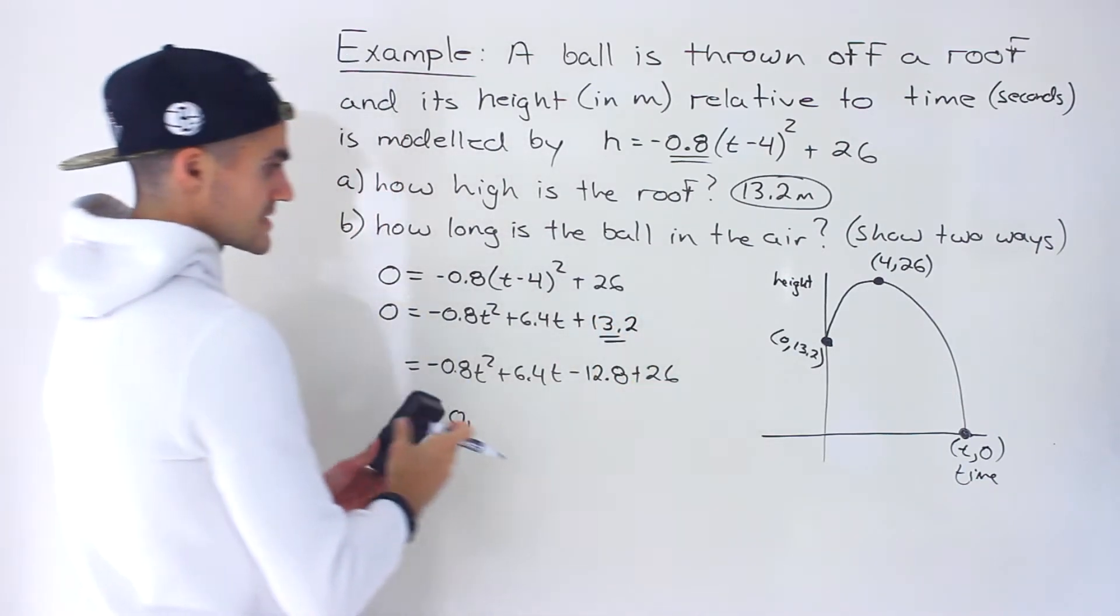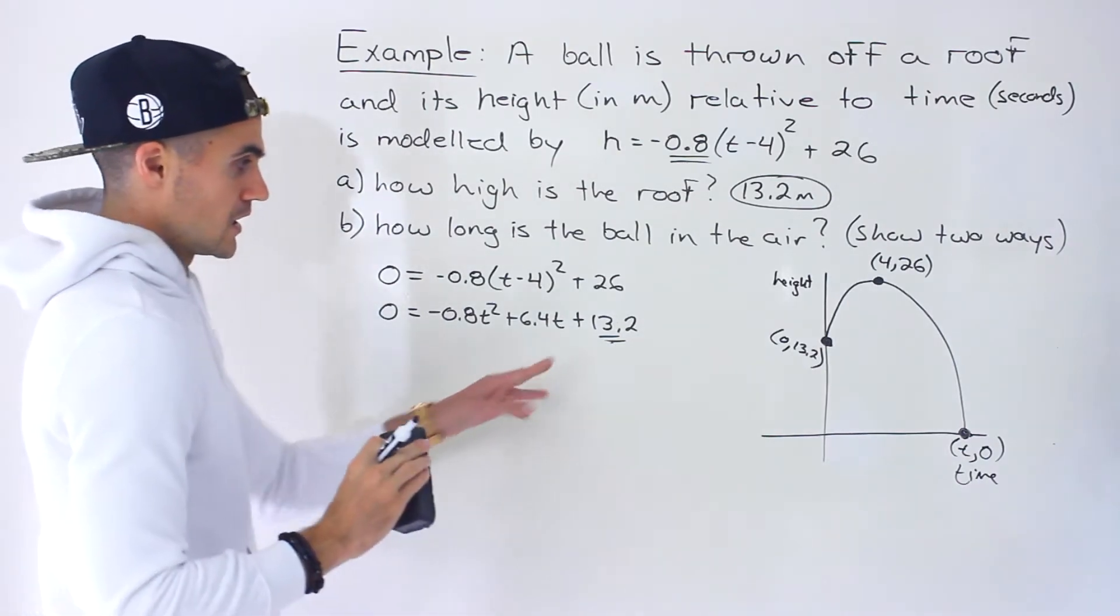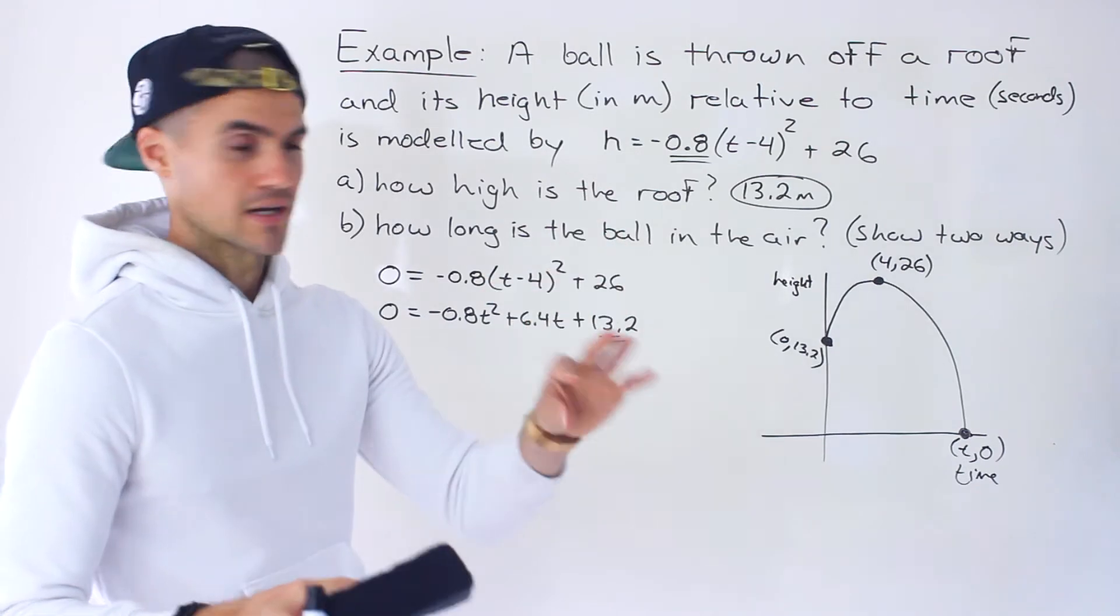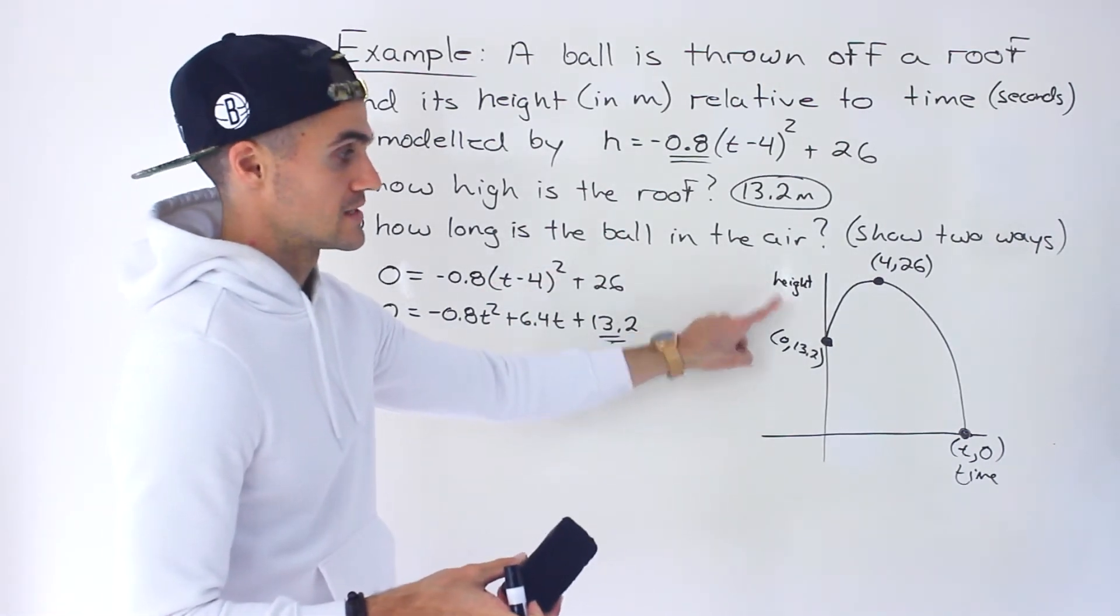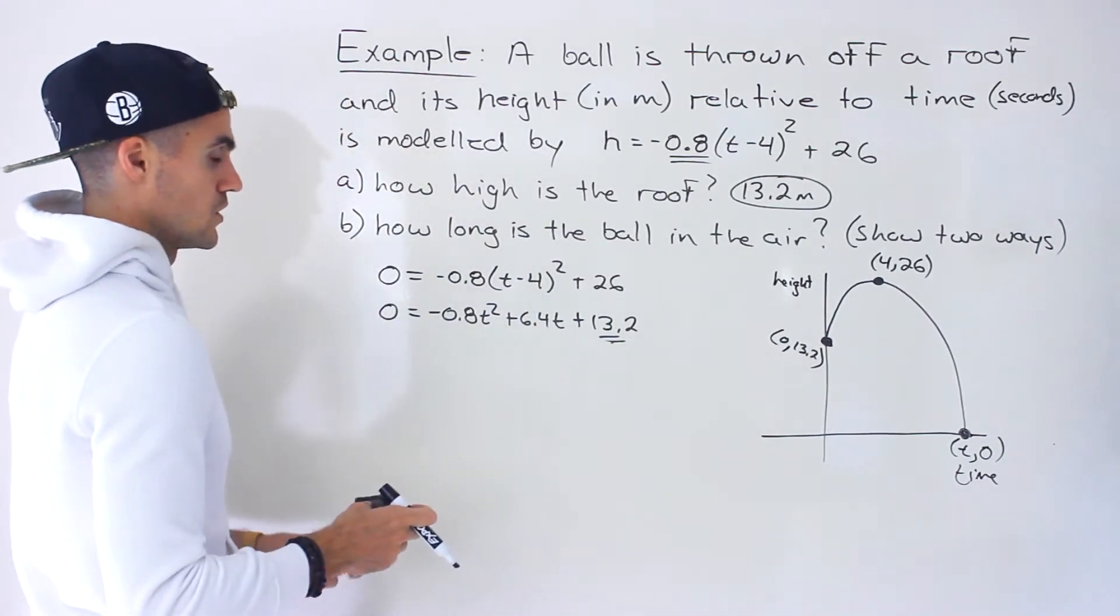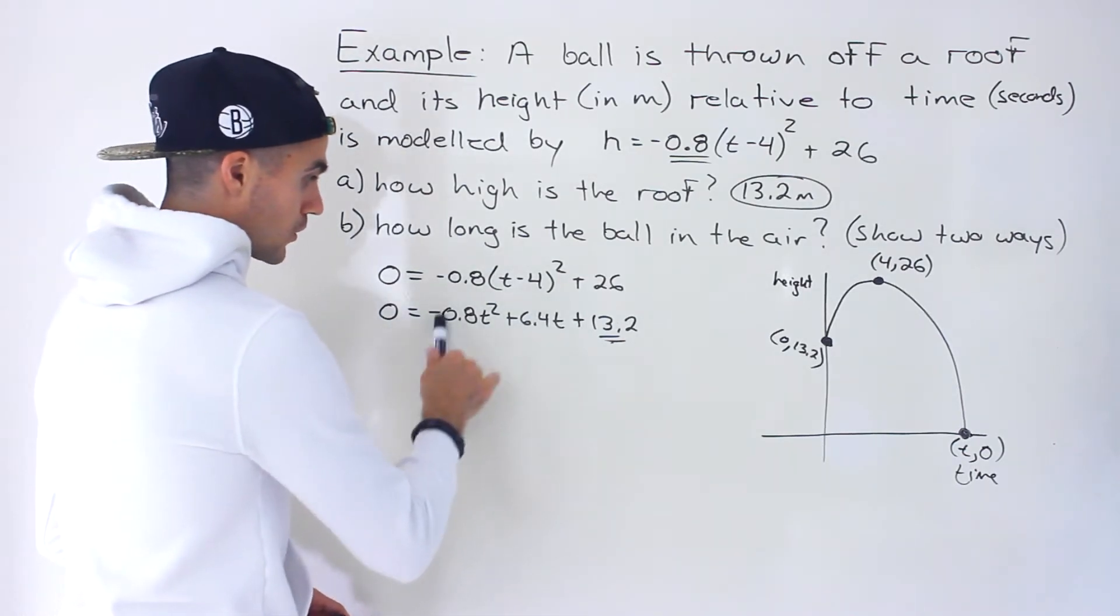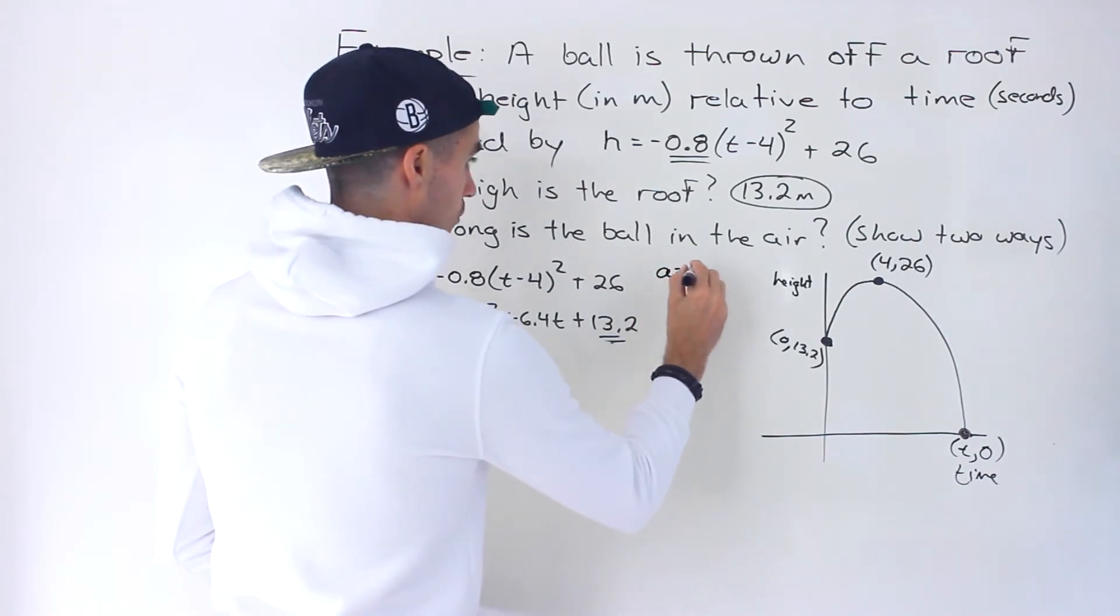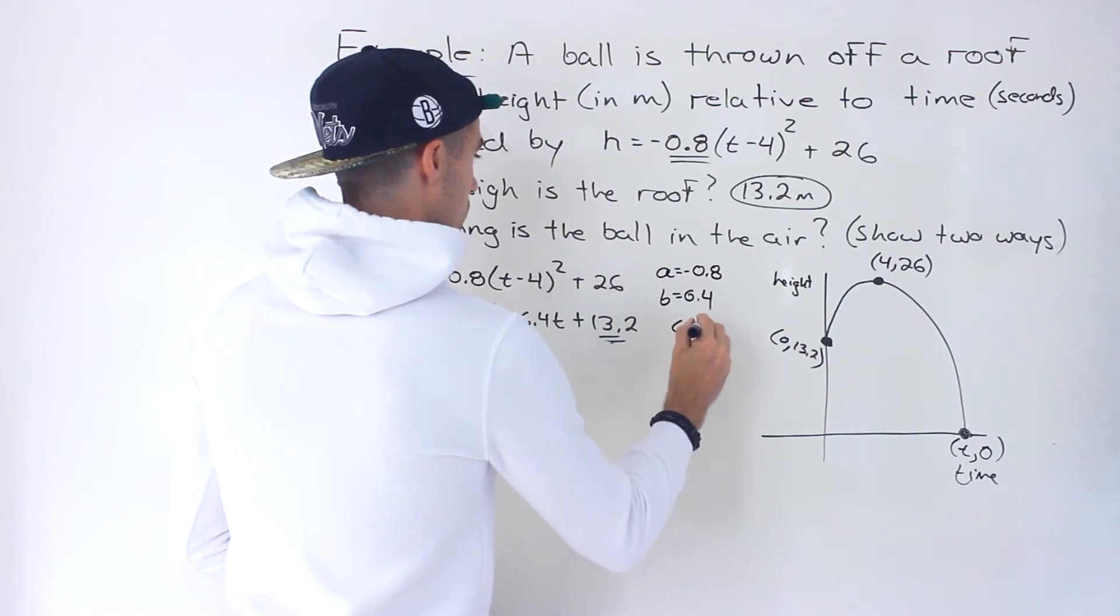It makes sense that we got a c value. Notice that this is now in standard form. The c value of a standard form quadratic ax² plus bx plus c, the c value is always going to be that y-intercept, or in this case, the h-intercept. So it makes sense that we got 13.2 right there as well. Now we have a quadratic equation where the quadratic's in standard form. The a value is negative 0.8, the b value is 6.4, and the c value is 13.2.